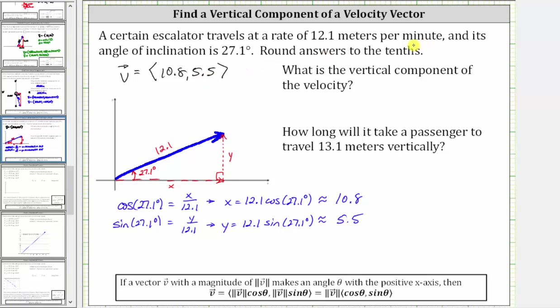So for the first question, the vertical component of the velocity is 5.5 meters per minute.